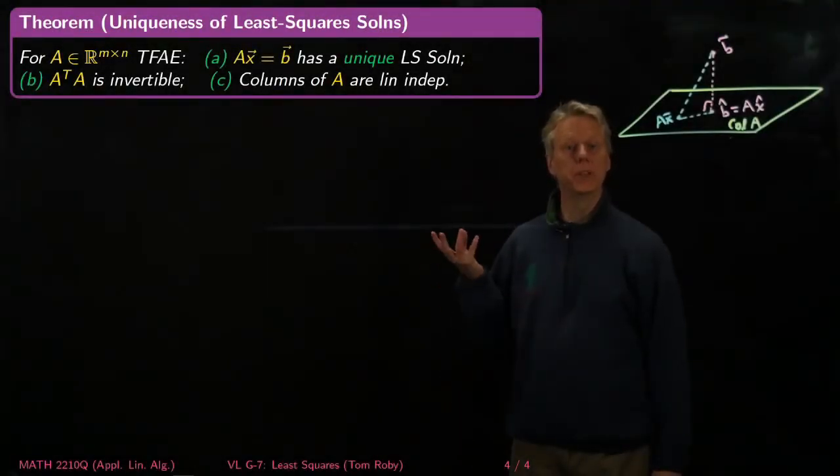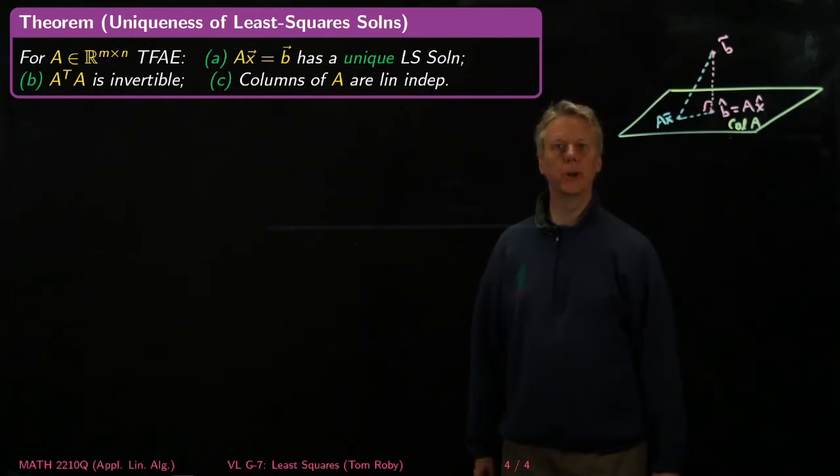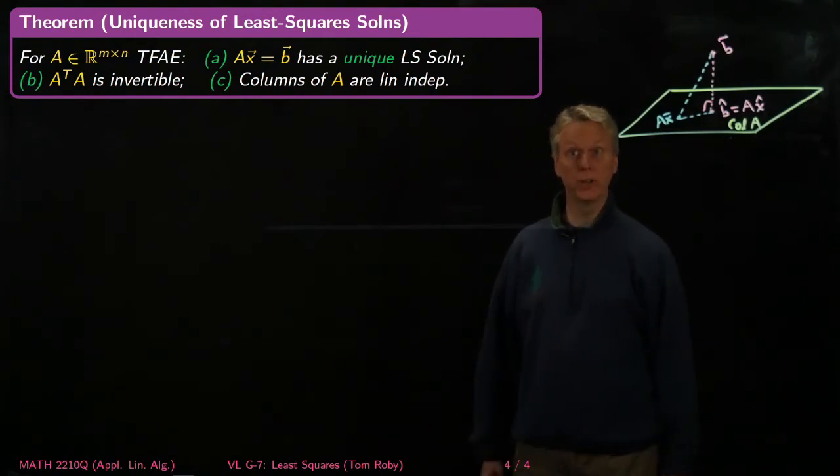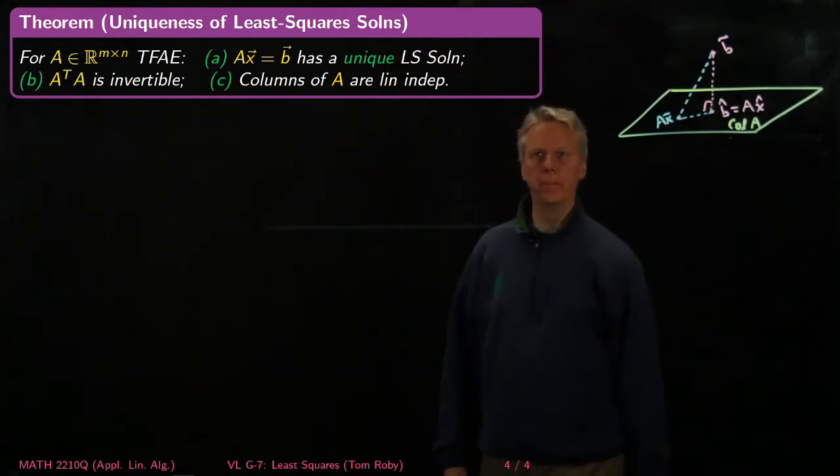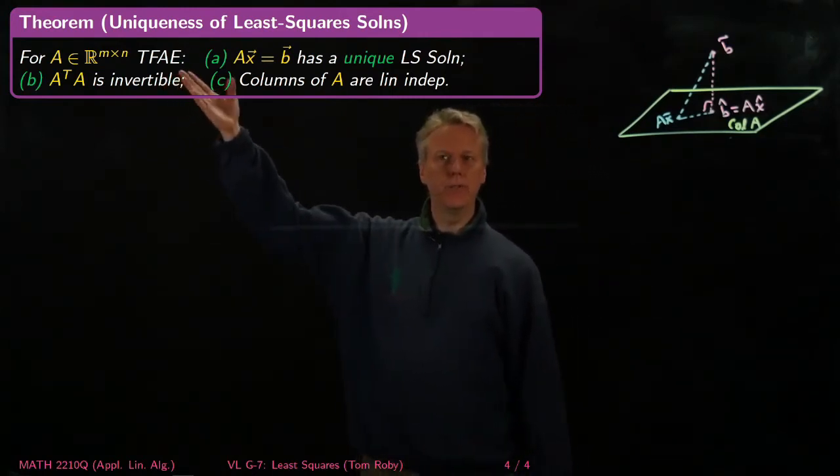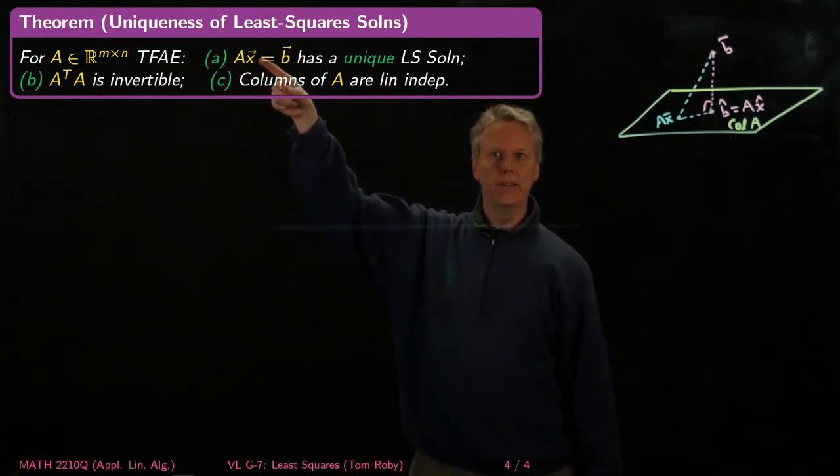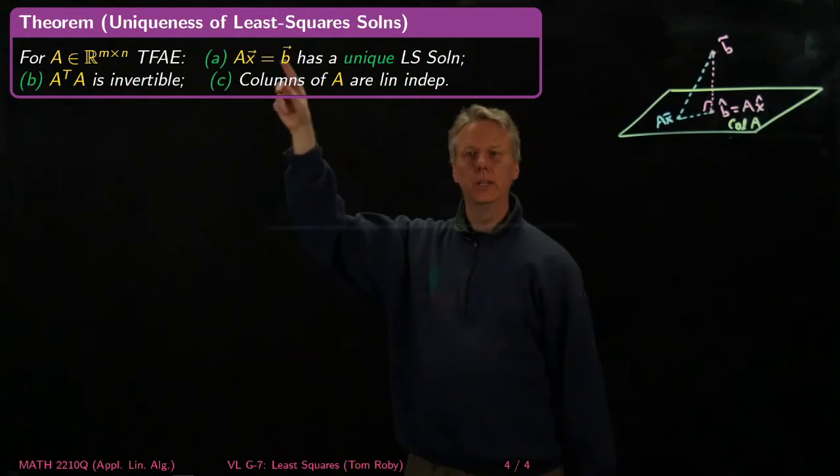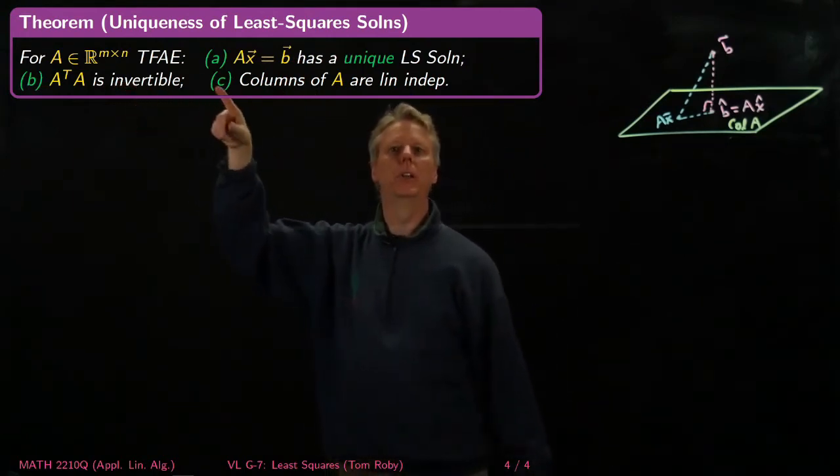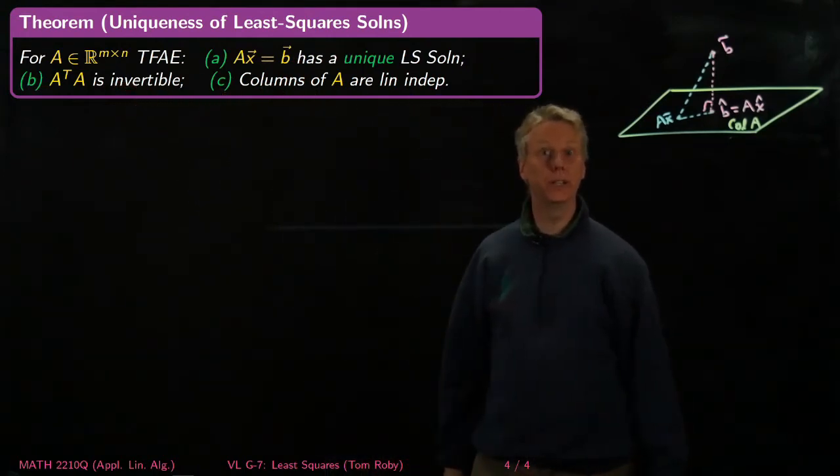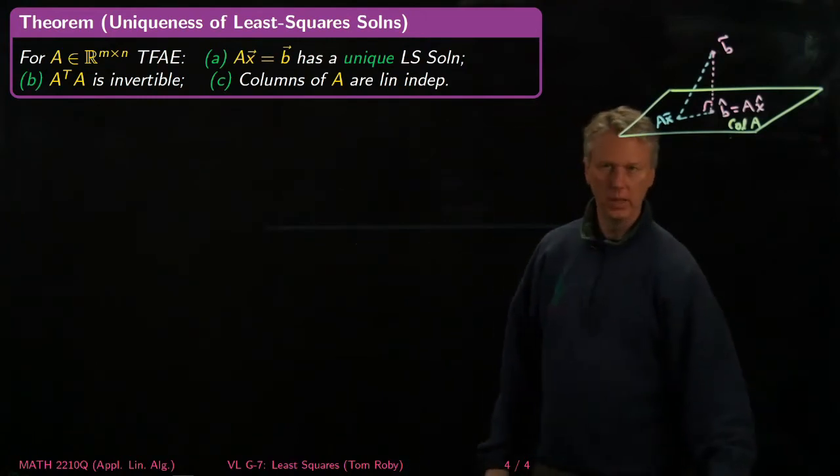Let's take a look at what the conditions are for when we're going to get a unique least square solution as opposed to possibly multiple ones. So for an m by n matrix, the following are equivalent (TFAE): (a) Ax equals b has a unique least square solution. (b) A transpose A is invertible. (c) The columns of A are linearly independent.